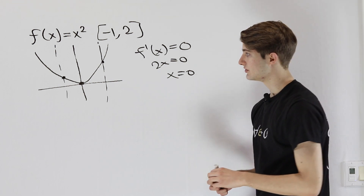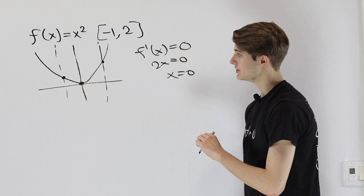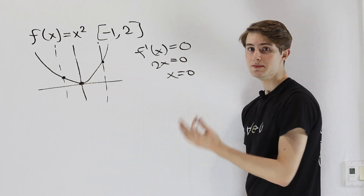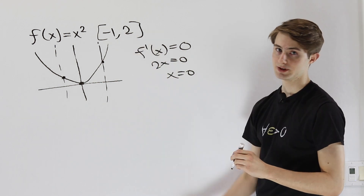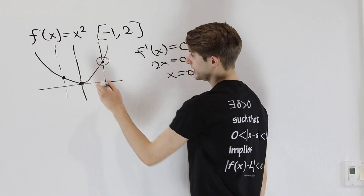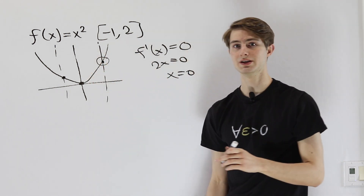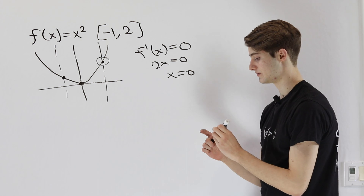In this case, we can see that our point at the origin is the minimum — the absolute minimum on this region — and the point at x equals 2 is the absolute maximum for our region.